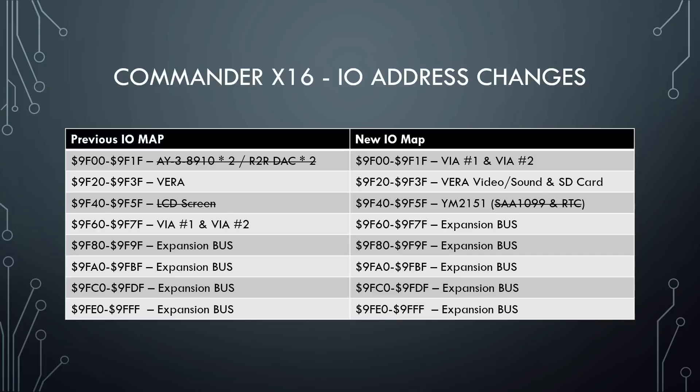The IO address range is really one of the key changes from the first prototype to the second. The chart below spells it all out, but as you can see the main differences involve the new sound chips and the removal of some old components that we no longer need. We went ahead and took this opportunity to rearrange things to where it made a little bit more sense, putting the VIAs in as the first IO device. The Vera stayed where it was, and the third device was originally used for both sound chips and the real-time clock.